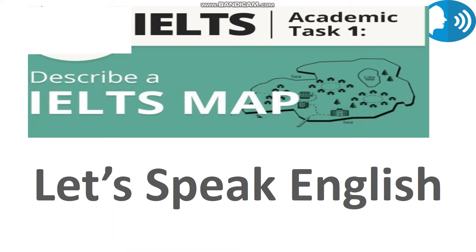Hi, I'm Lalata from Let's Speak English. In task 1 of the academic writing component of the IELTS, you may be asked to describe a map or a plan, wherein you will have to compare one map to another. Your writing will be scored on four criteria: first, task achievement; then coherence; the third is lexical resources; and the fourth is grammatical accuracy. Let's review techniques to achieve a good score in all four areas.